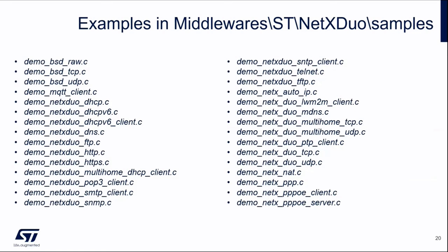Generally speaking, this is the full list of examples inside the middleware folder that Microsoft gives you. You can see that all of the layers are covered: BSD, MQTT, DHCP, DNS, file transfer, HTTP client, SMTP — so POP as well, if you want to send or receive an email — Telnet, and multicast DNS. Multicast DNS is very nice if you want to discover what's going on around your device in terms of other devices and what services they offer.